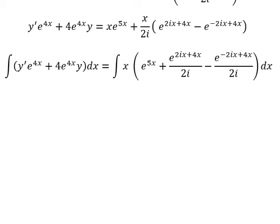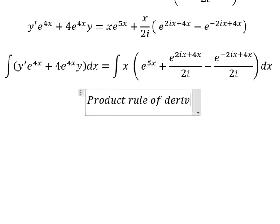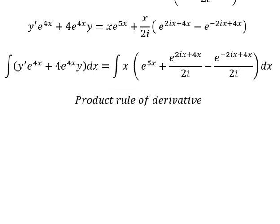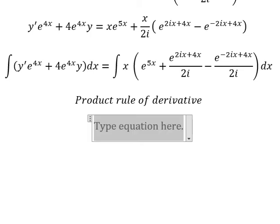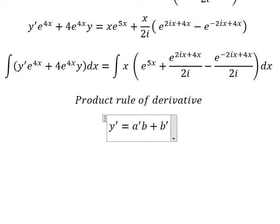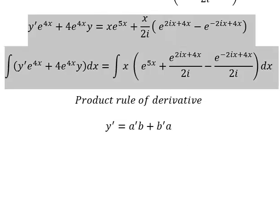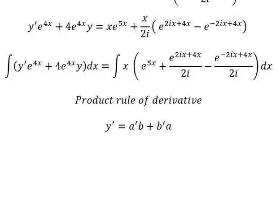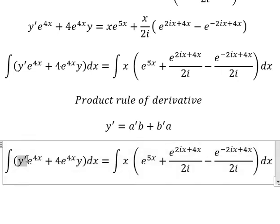We can use the product rule of the derivative. So we have the first derivative of y equals the first derivative of A multiplied by B, plus the first derivative of B multiplied by A. If we look carefully at this one, that is about the first derivative of B multiplied by A.